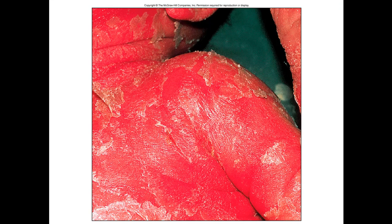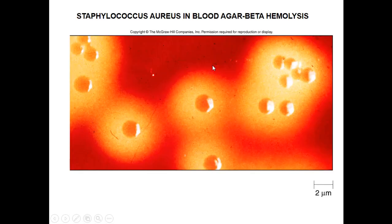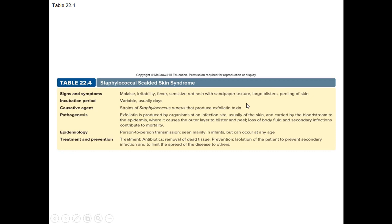Here is another example of scalded skin syndrome in an infant where literally sheets of skin have been peeling off — underneath that redness is inflammation, and in some cases you're down to the dermis, not just the epidermis. Here is S. aureus in blood agar with beta hemolysis occurring, where the blood cells are being lysed. Staphylococcal scalded skin syndrome is described in table 22.4.